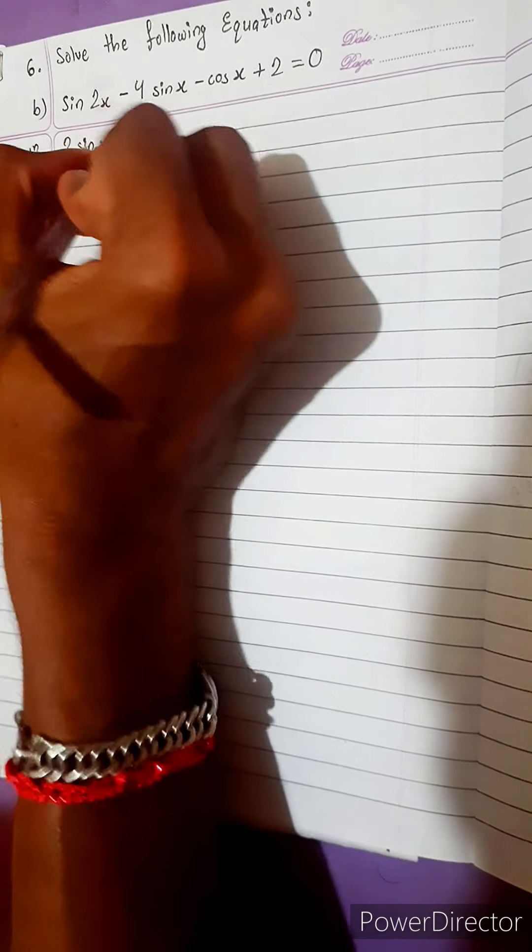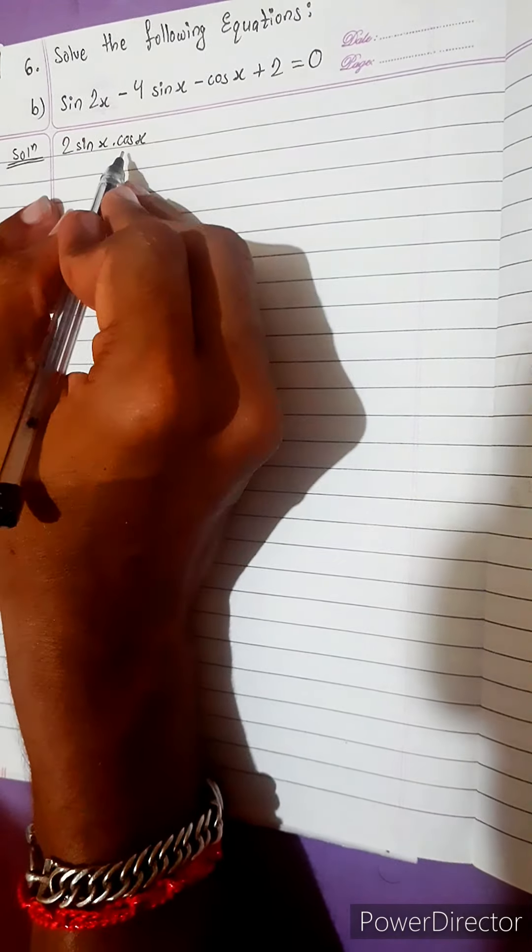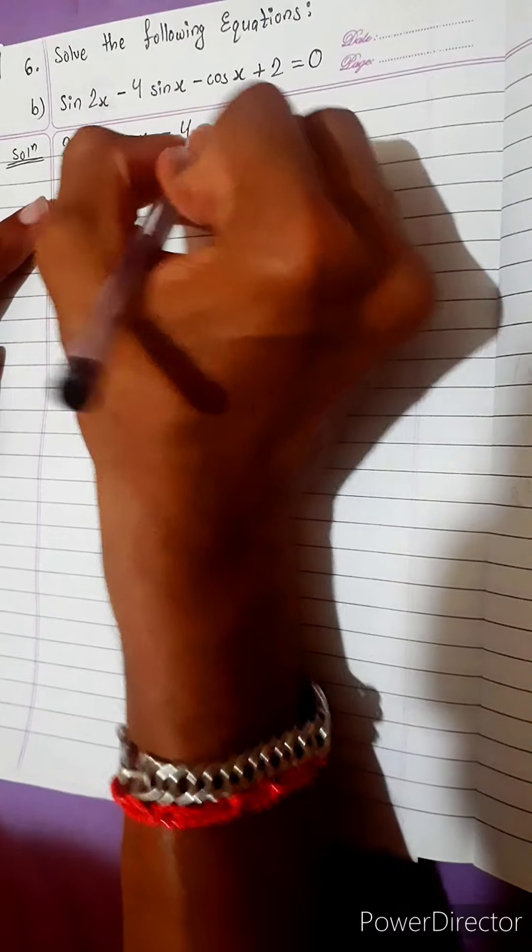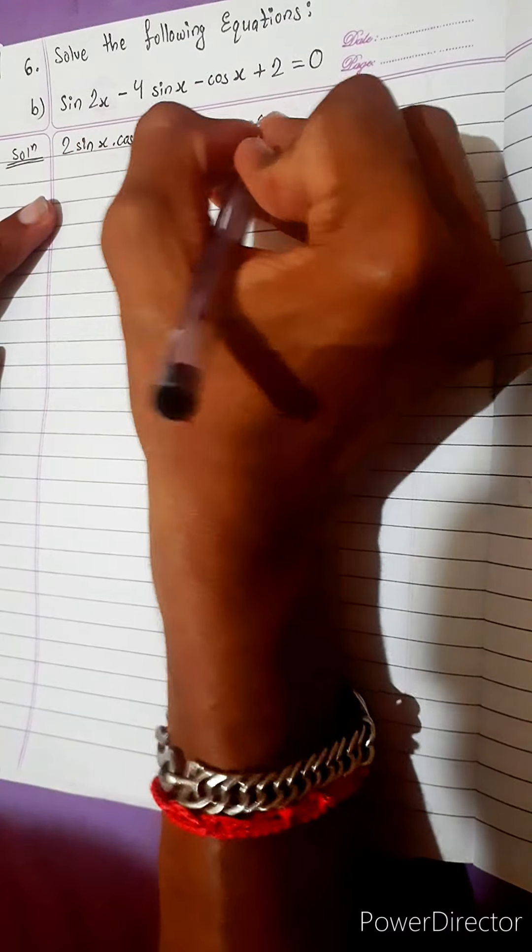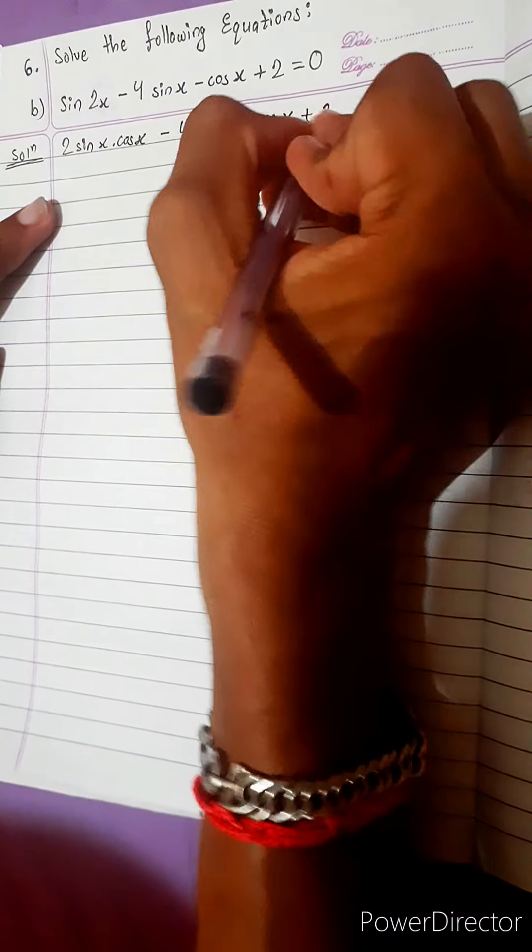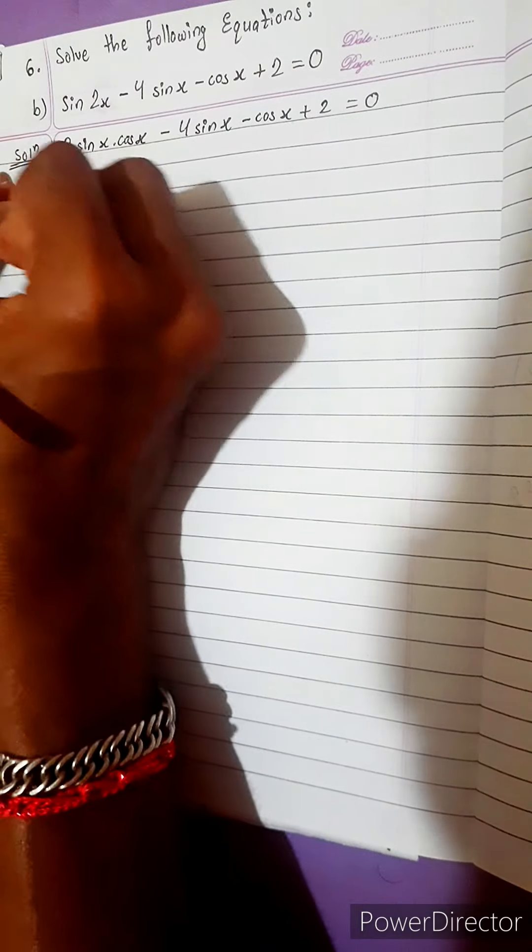Solve the following equations. This is also very easy and similar to previous question. Sin 2x. First expand. Sin 2a is 2 sin a cos a. You use this formula. And remaining copy as it is, same to same.